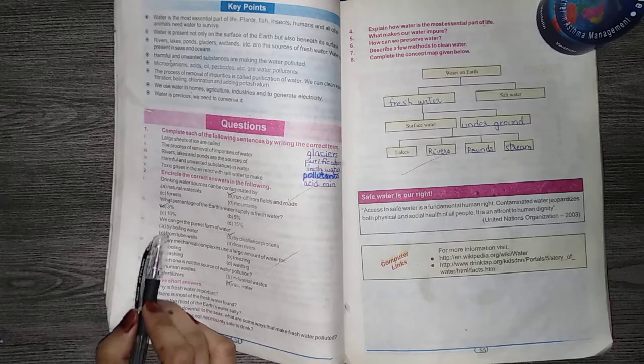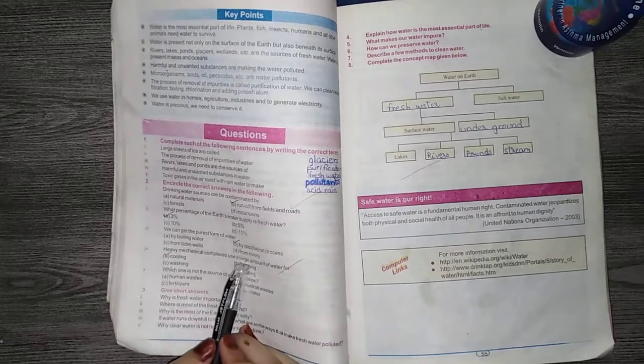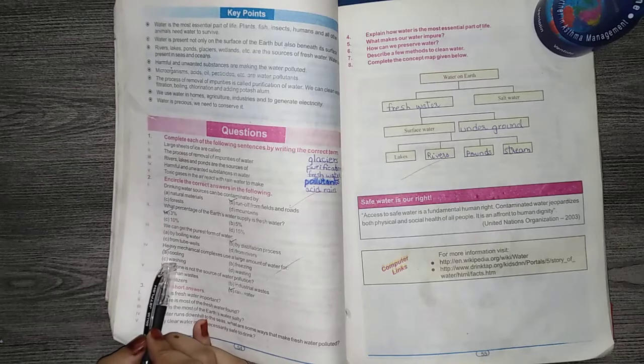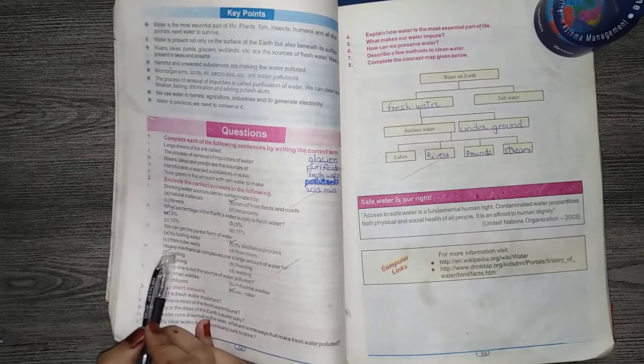Number 4, heavy mechanical complexes use a large amount of water for: A, cooling, B, freezing, C, washing, D, wasting. So this answer is A, cooling.